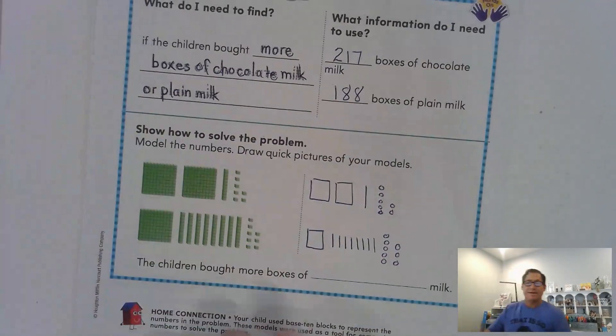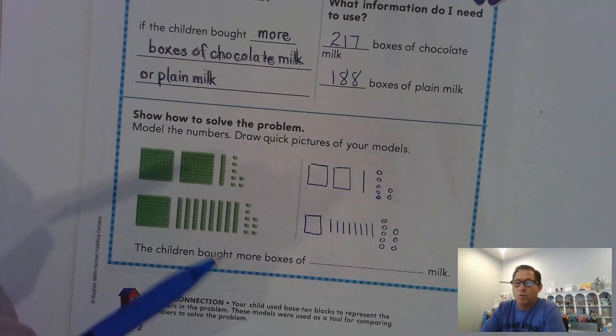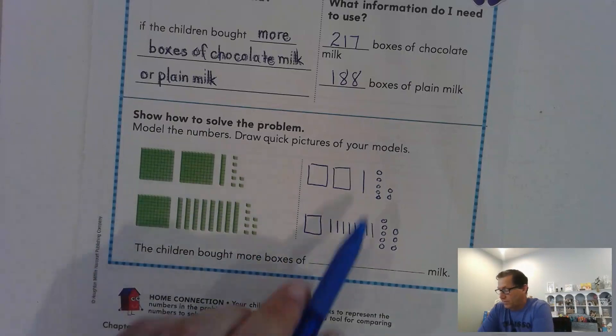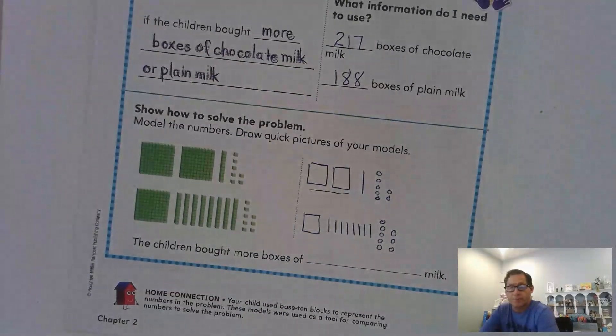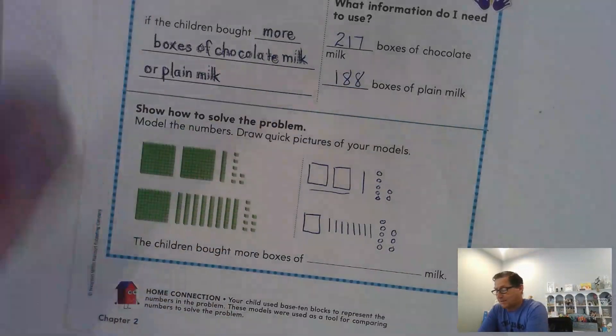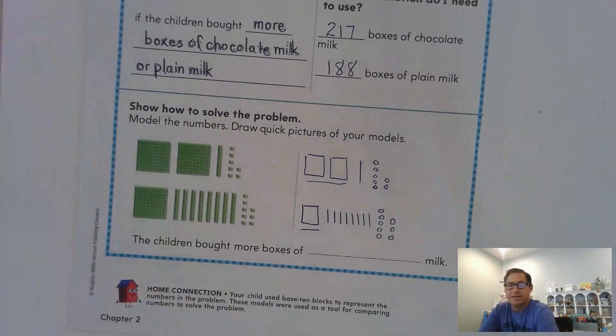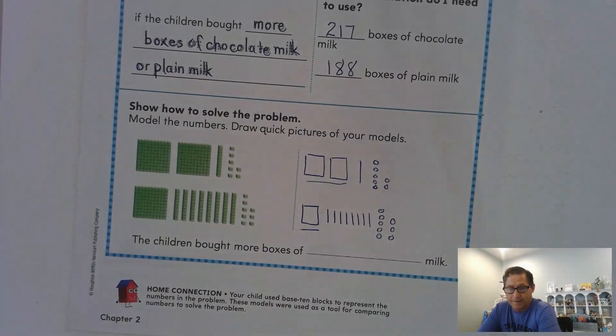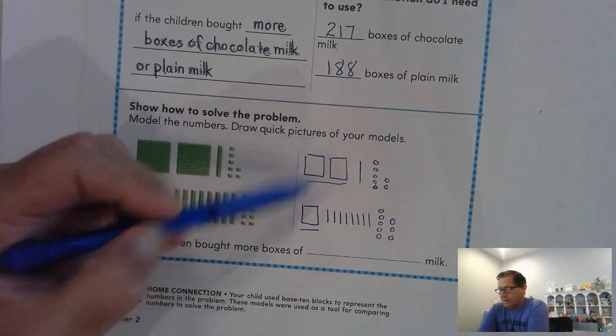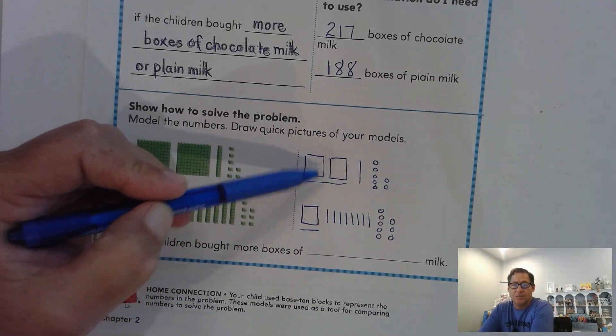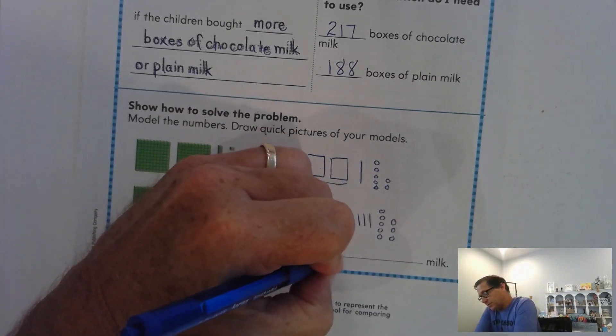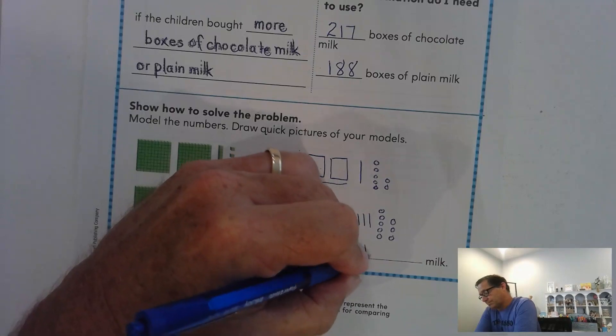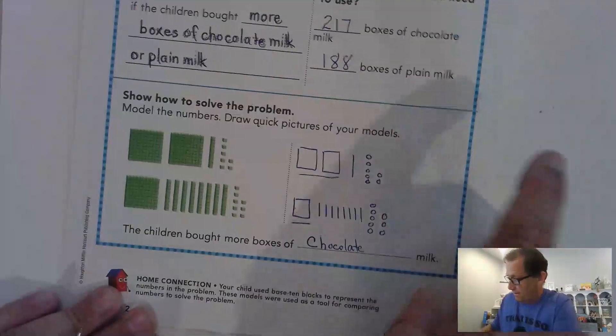Now, when we compare numbers, we want to go with the largest value in the number. In 217, the 100s are the largest. In 188, the largest digit is the 100s. Just by comparing the 100s, I can see which one is more. This one has 200, this one only has 100. So there's clearly more boxes of chocolate milk.